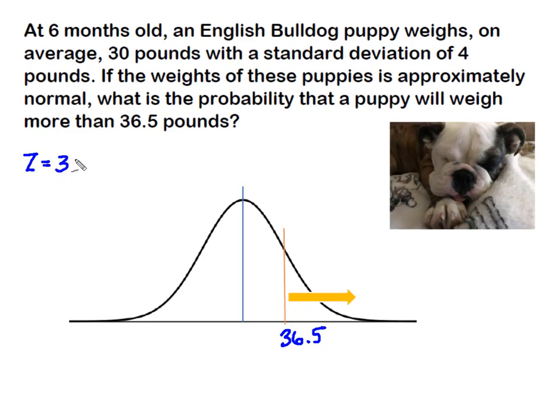So we simply take 36.5 minus our average of 30, divide it by our standard deviation of four pounds, and we get a z of 1.625, which we're going to round up to 1.63. So we know that we have a positive z of 1.63.